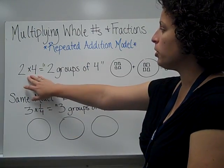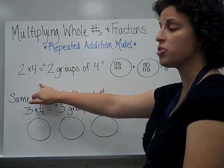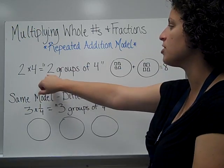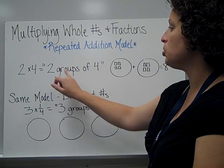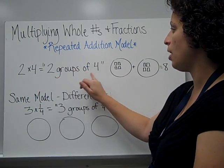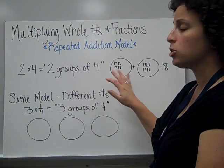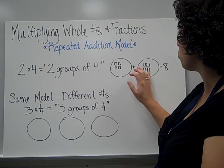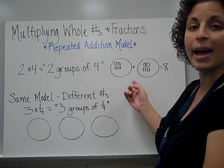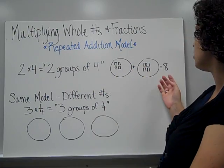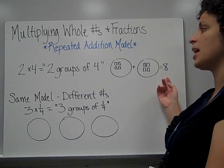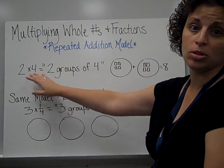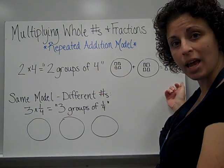When you were learning 2 times 4, you learned that that was the same thing as having 2 groups of 4. So you'd draw your 2 groups, you'd fill them with 4 each, add them together, and find that that was 8. So 2 times 4 was 8.